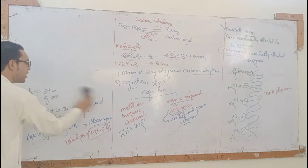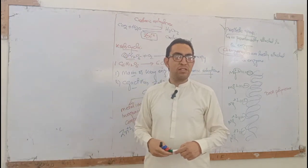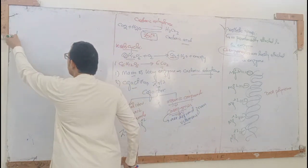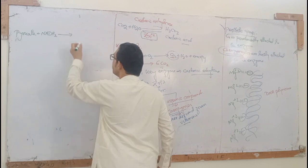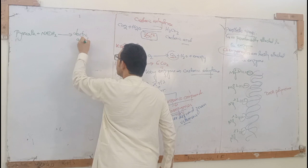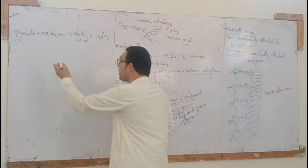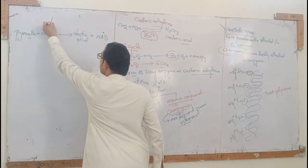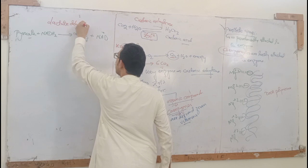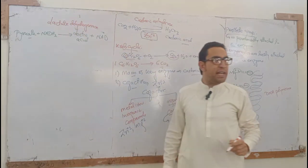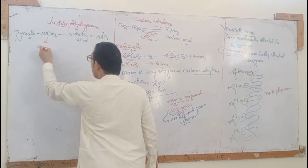Now let us look at an example. We have a reaction involving pyruvate and lactic acid. In this reaction, pyruvate is converted to lactic acid. The enzyme responsible for this reaction is lactate dehydrogenase. The coenzyme involved is NADH₂.